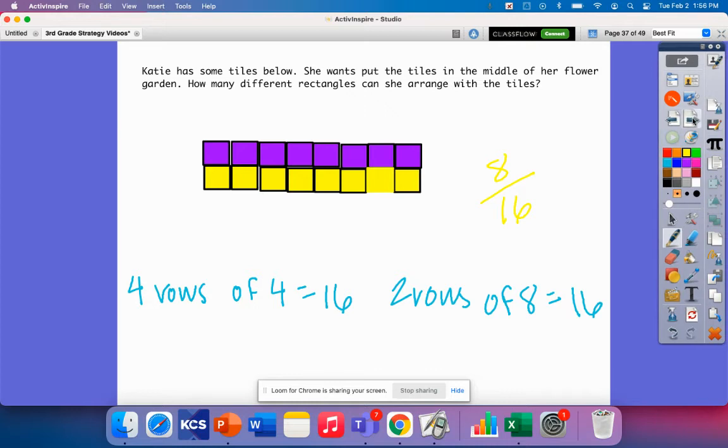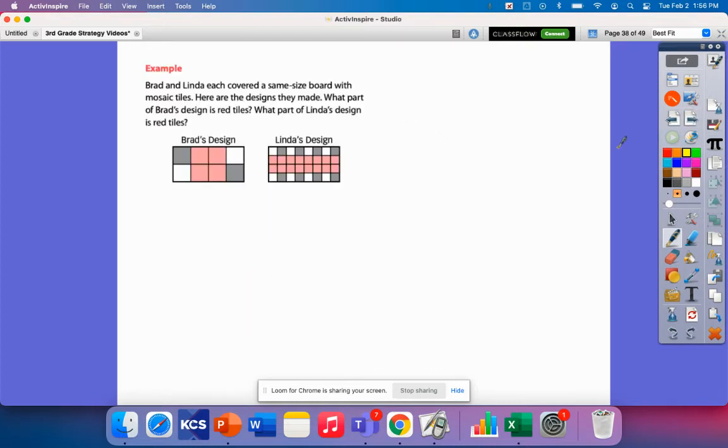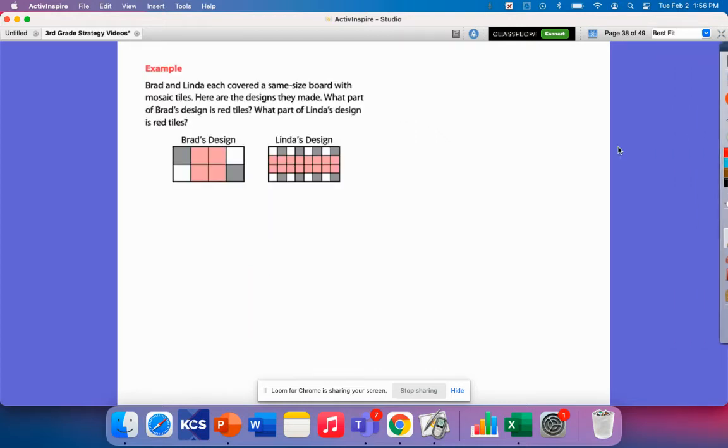Let's look at another problem. So this example problem says Brad and Linda each covered a same size board with mosaic tiles. Here are the designs they made. What part of Brad's design is red tiles? And what part of Linda's design is red tiles? Well, let's just think about how many tiles does Brad have?